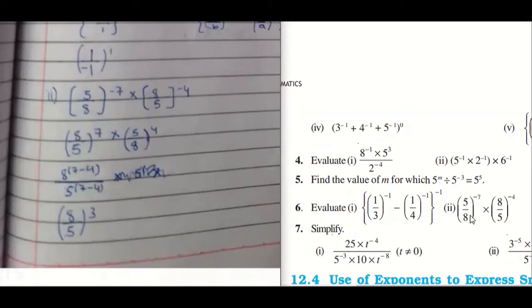So 6th question, second part: 5 upon 8 power minus 7 multiplied by 8 upon 5 power minus 4. We'll do it two ways. One way which you have done is making the power positive, is correct, but you have not written the law. Now is very important. Make sure you write that law.